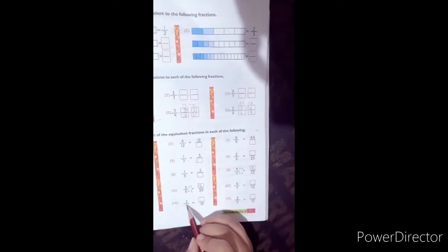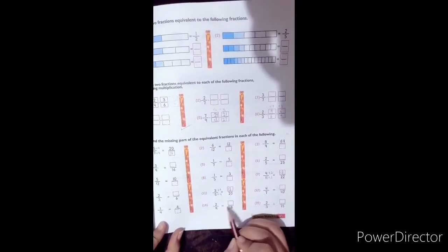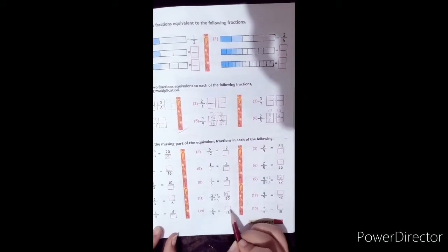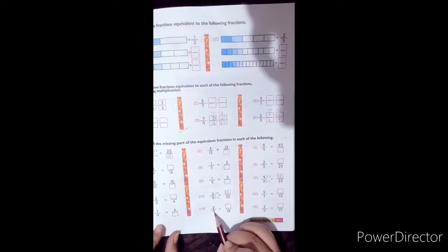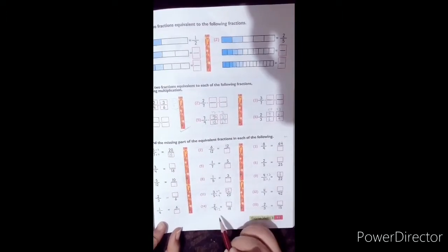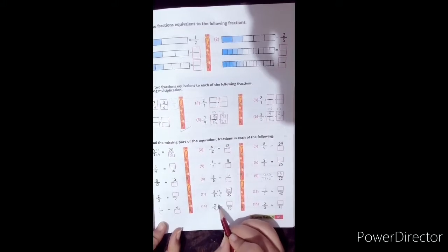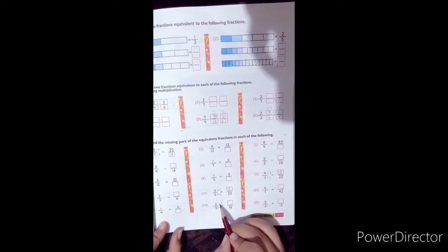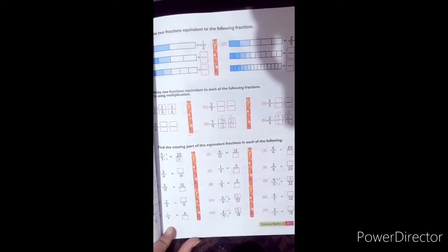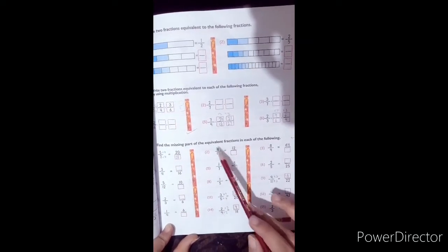Here we have question number 14. 2 by 9 is equal to dash by 18. Now how to fill the missing number? 2 times 9 is 18. If the denominator is multiplied by 2, then the numerator is multiplied by 2. 2 times 2 is 4. I hope students you will understand how to find the missing fraction.